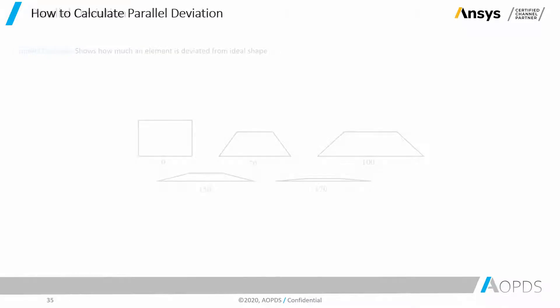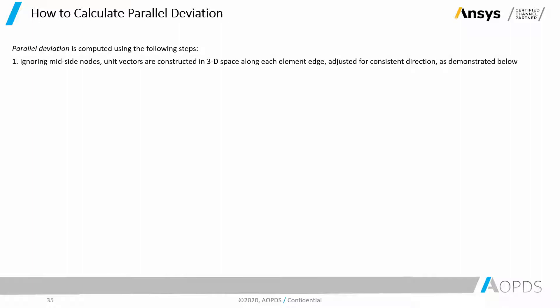Now let's see how we can calculate parallel deviation. Parallel deviation is computed using the following steps. Number one: ignoring mid-side nodes, unit vectors are constructed in 3D space along each element edge, adjusted for consistent direction, as demonstrated below.